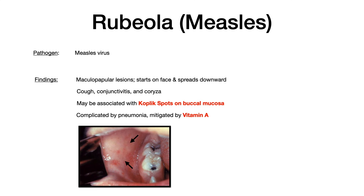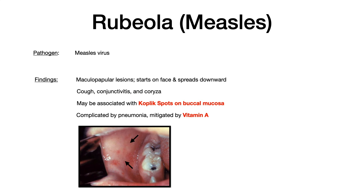For the mnemonic: measles sounds like mussels, so think measles marinara instead of mussels marinara. That reminds you of Koplik spots, because if you ate measles marinara, you might get little red spots inside your mouth from the marinara sauce. It also reminds you that the rash starts around the mouth and face, then works its way down. That's the mnemonic for measles.